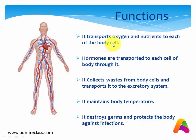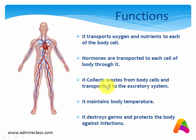So the circulatory system transports oxygen and other nutrients required by our body to each body cell. Second, hormones are transported to each cell of our body. Third, it collects waste from body cells and transports it to the excretory system. It also maintains our body temperature, and lastly, it destroys germs and protects our body against infections.